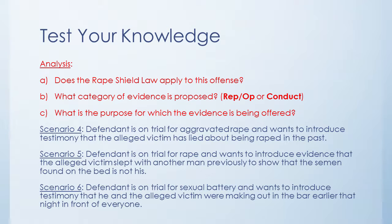Scenario five: defendant is on trial for rape and wants to introduce evidence that the alleged victim slept with another man previously to show that the semen found on the bed is not his. In this instance, the Rape Shield Law will allow specific instances of conduct of sexual behavior with other persons to explain the source of semen — falling under subcategory 4-2 — and it will be admissible.